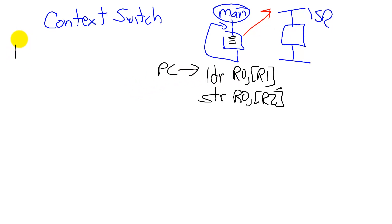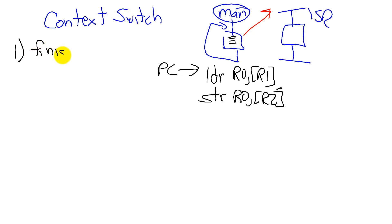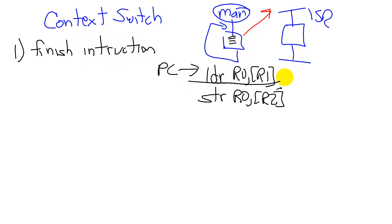The first thing that will happen is, assuming the priority is high enough and it's armed and enabled and the IBIT is all zero like we did before, the first thing that will happen is it will finish the instruction. Instructions take a finite amount of time to execute, so this instruction that I'm executing will finish.